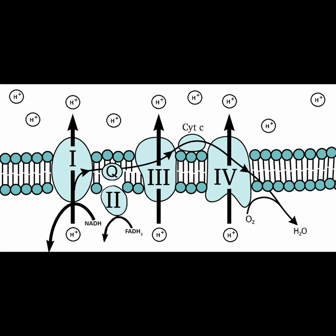Within the inner membrane, there are four different complexes labeled one through four, which are large, multi-protein structures, as well as two smaller, intermediate transport molecules. This is what we call the electron transport chain, or ETC.